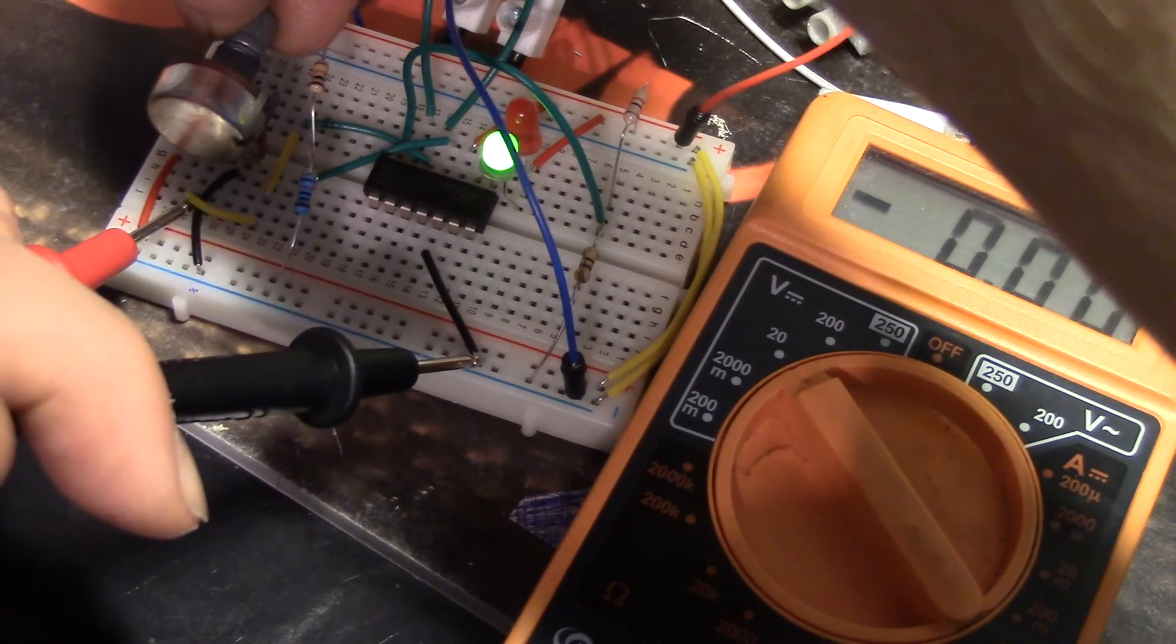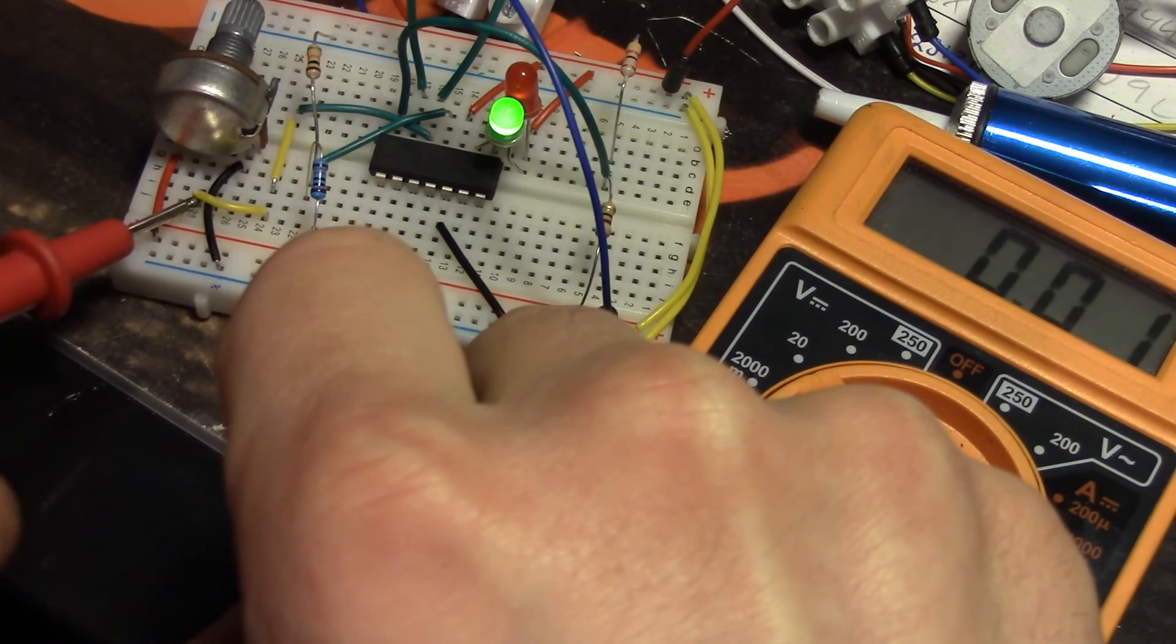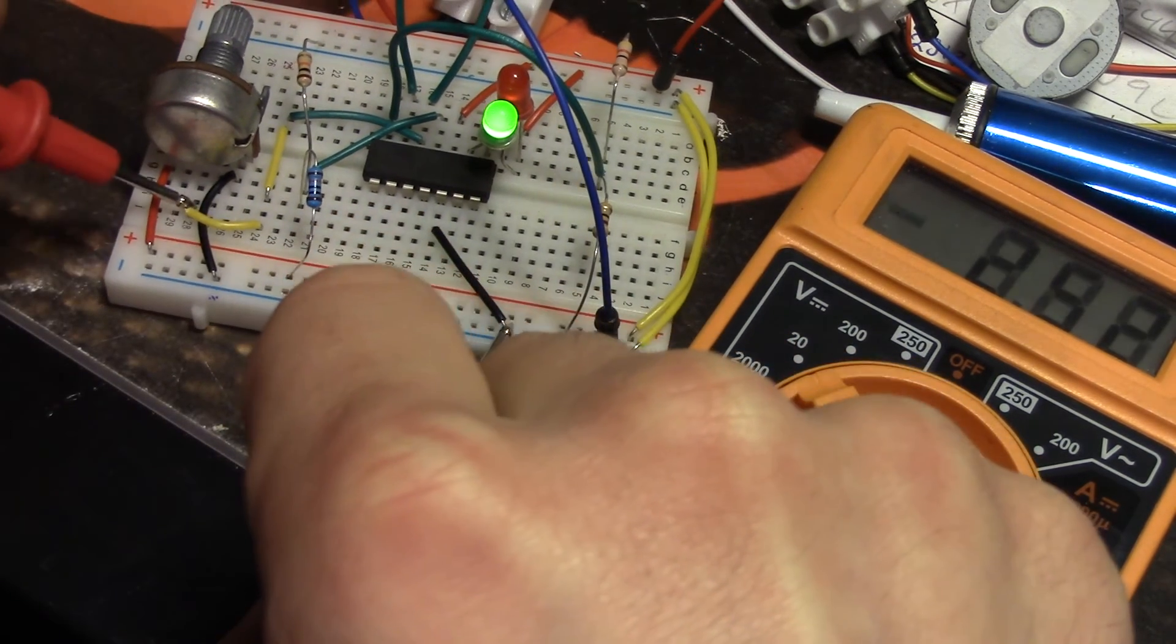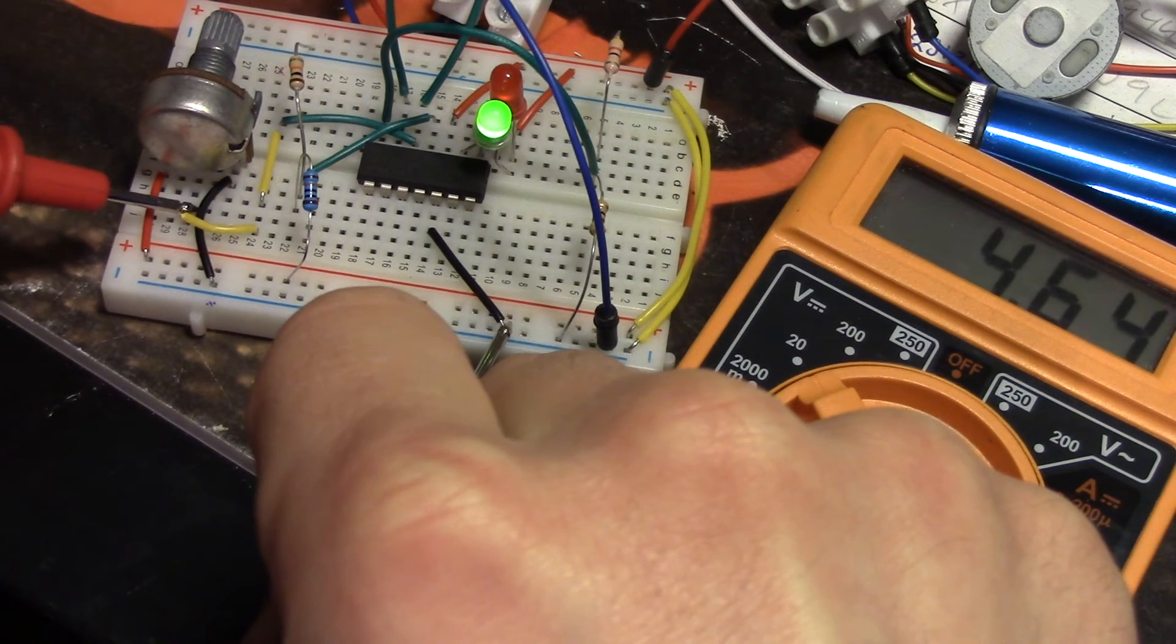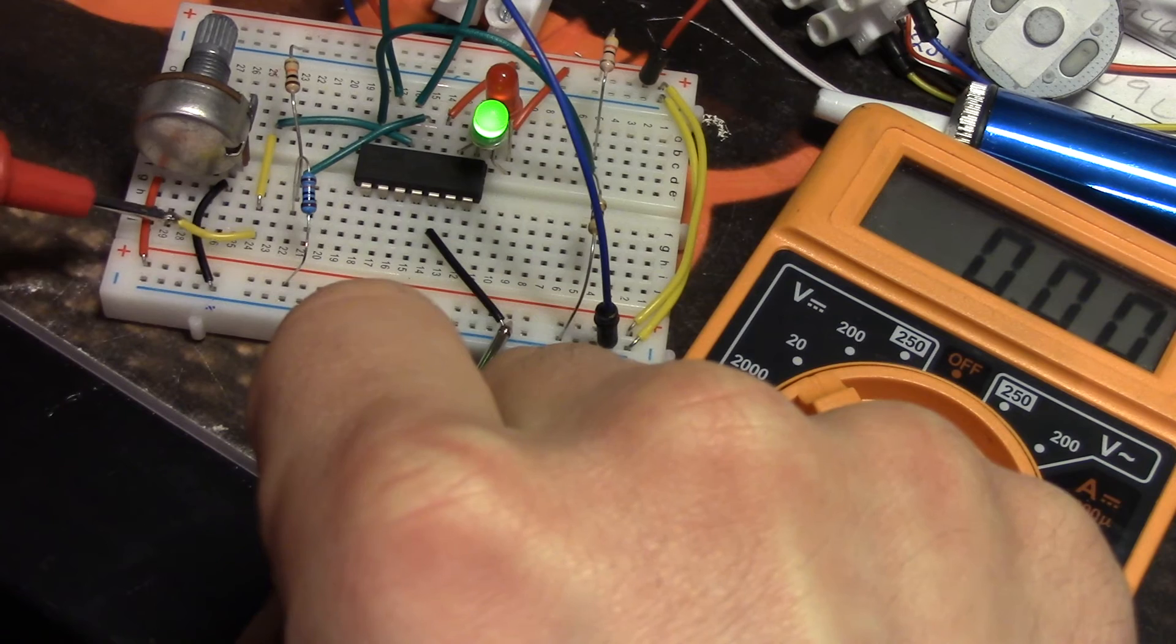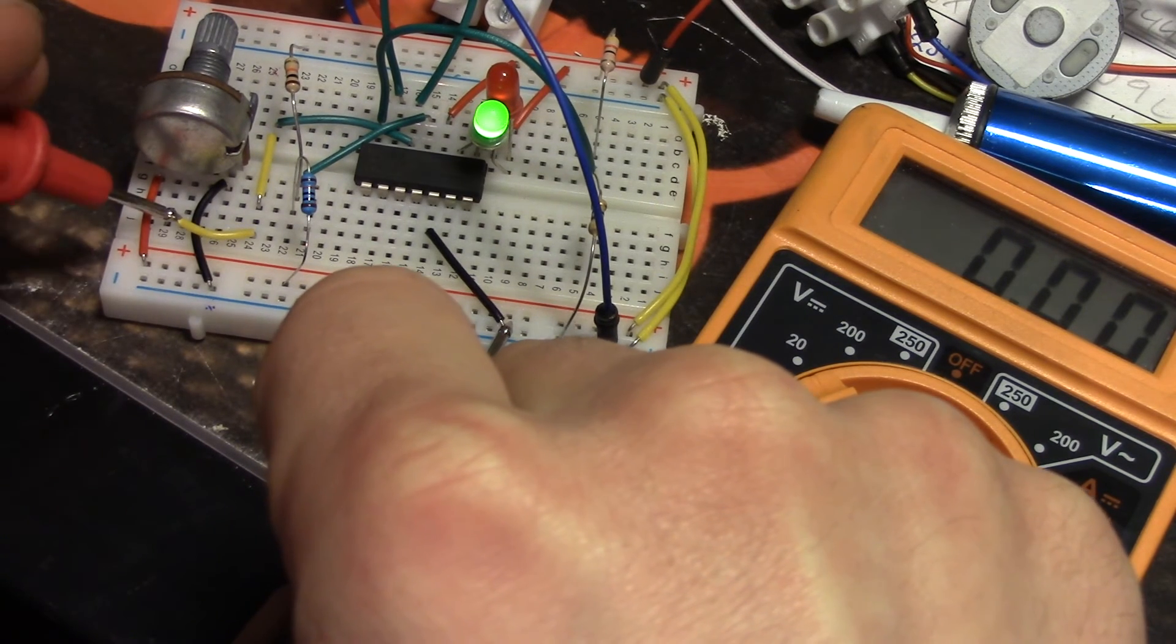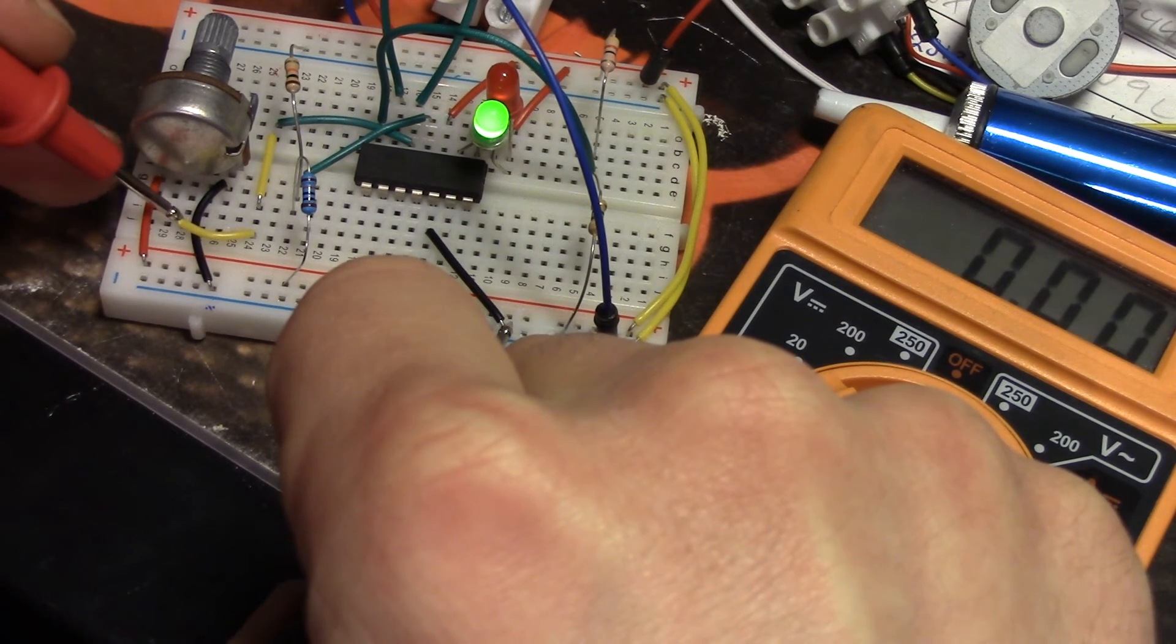let's see if we can get the multimeter. So when the green LED is on, it's saying that we have five volts, which is our wanted voltage.